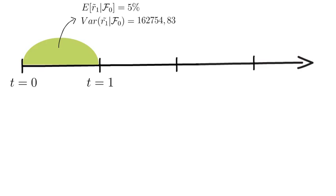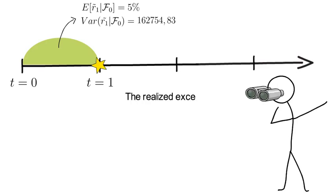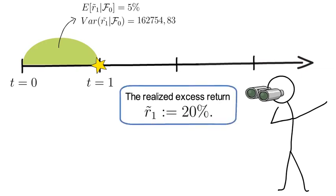Now we shuffle time forward by one period. So we are now in t equals 1. And the investor observes the realized excess return r̃_1. I assume it took the value of 20%. For that example here I assume r̃_1 is 20%. So the resulting prediction error is 15%.